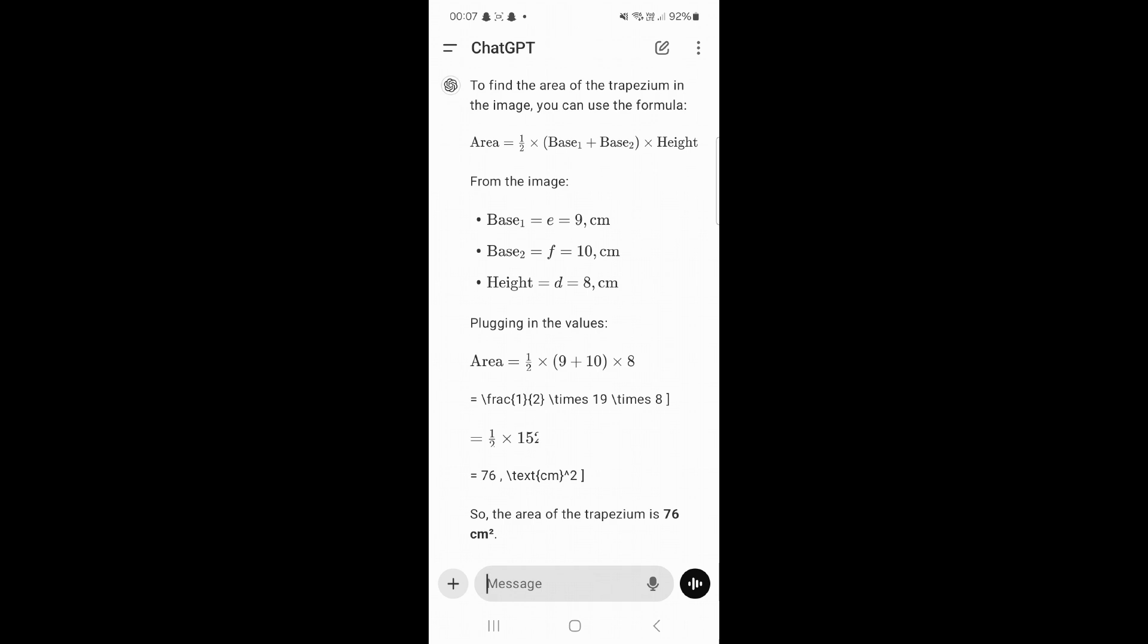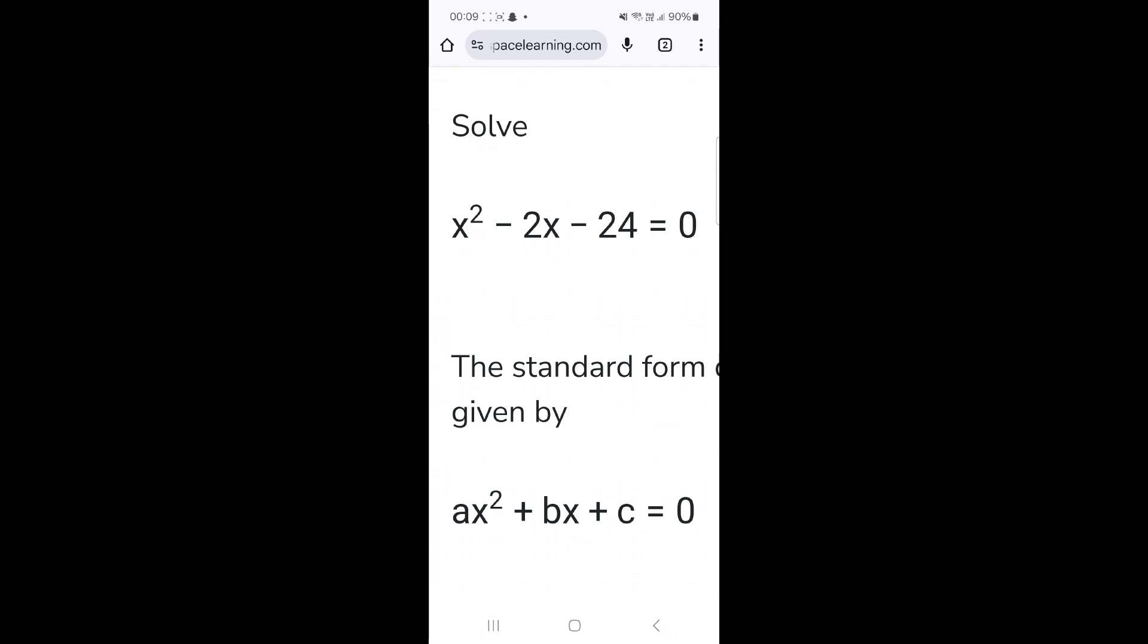So you can see the step-by-step solution and the answer, which is 76 centimeter square. This is one of the ways. The other way you can use ChatGPT app to solve mathematical questions is if you've seen a question online and you want to find the answer for that. For example, on my screen you can see there's this equation and we want to solve it.